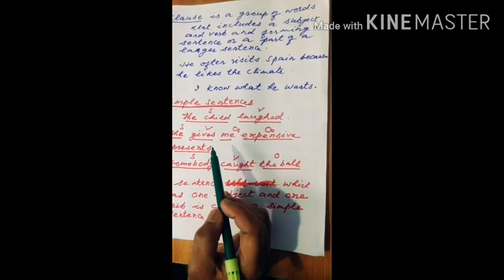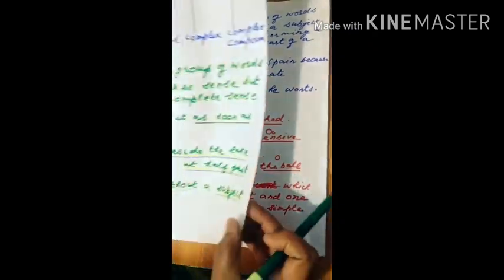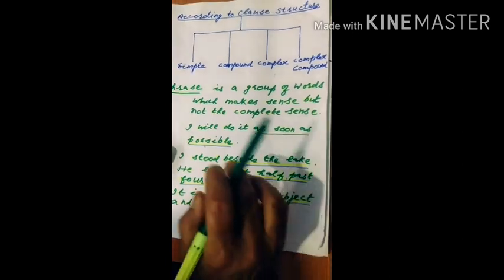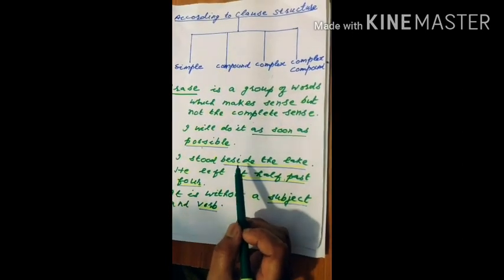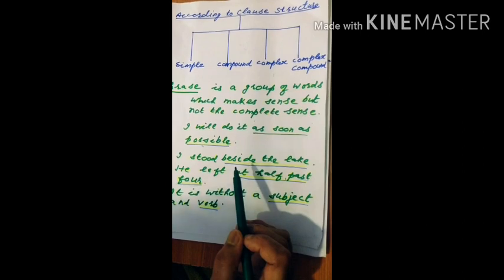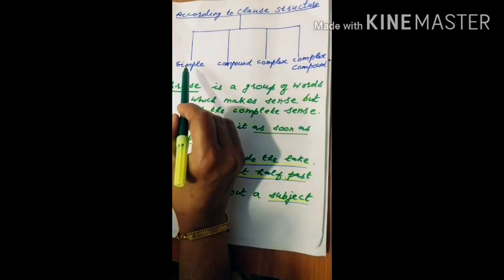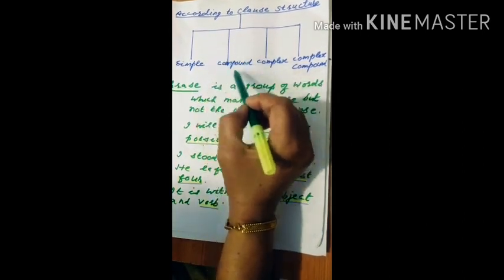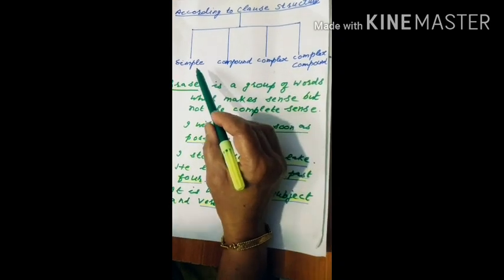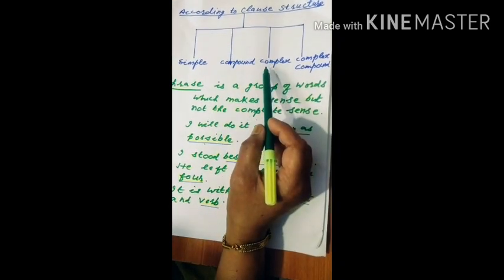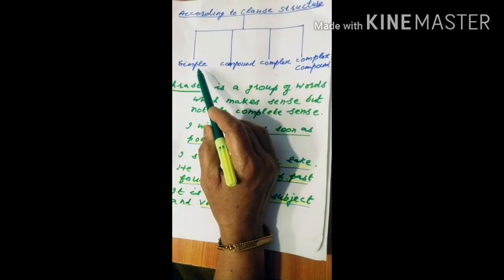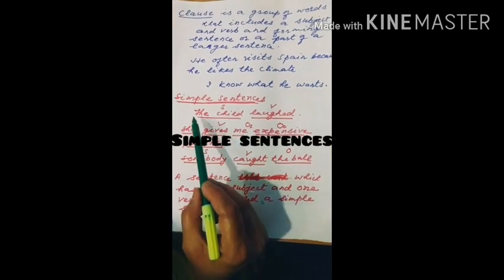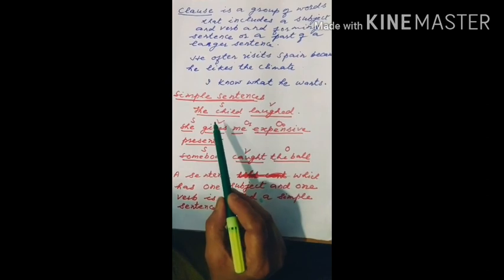Now we come on to today's topic: classification of sentences based on clause structure. According to clause structure, sentences are of four types. The first type is simple sentences. Have a look at these few examples.